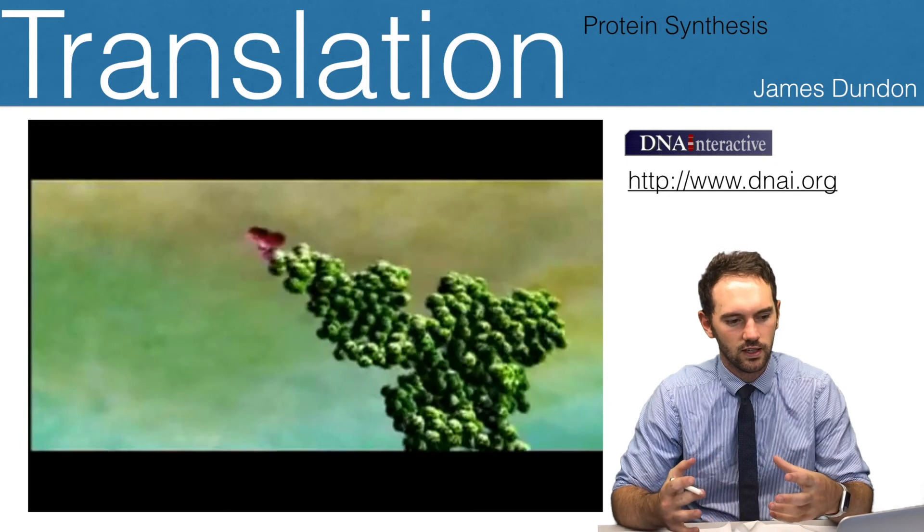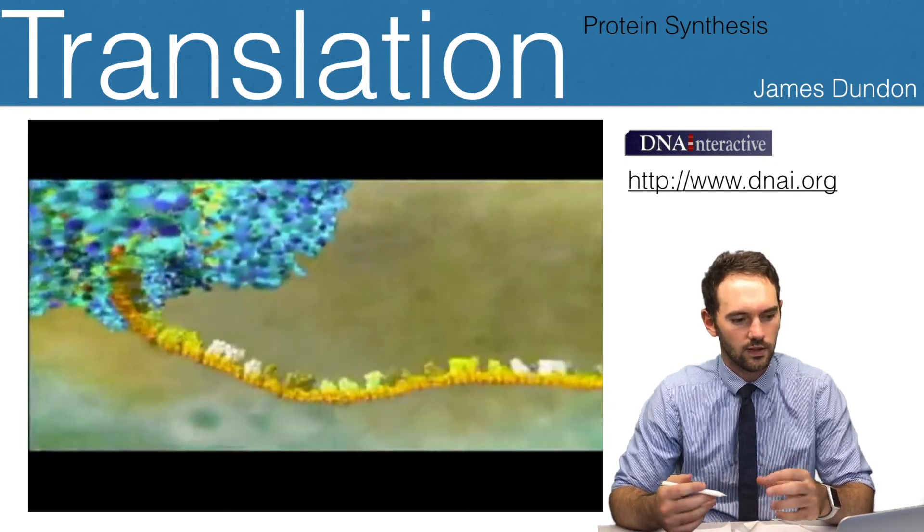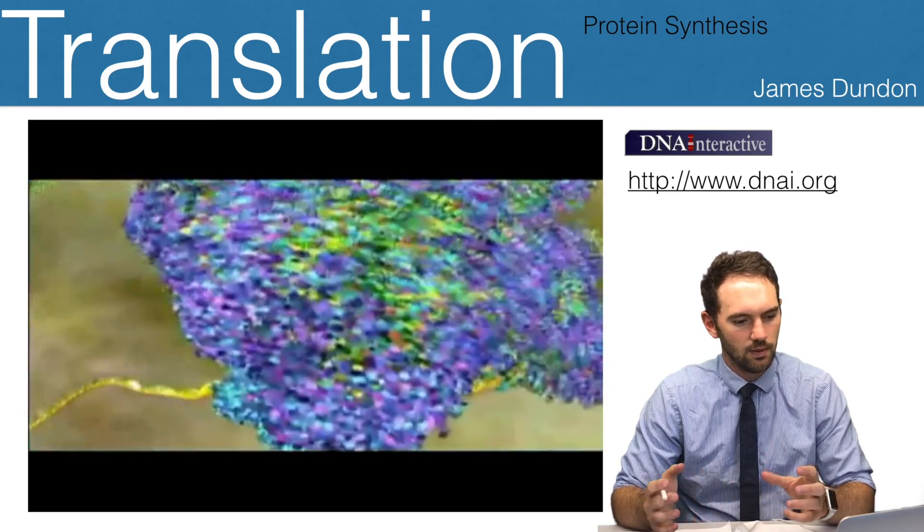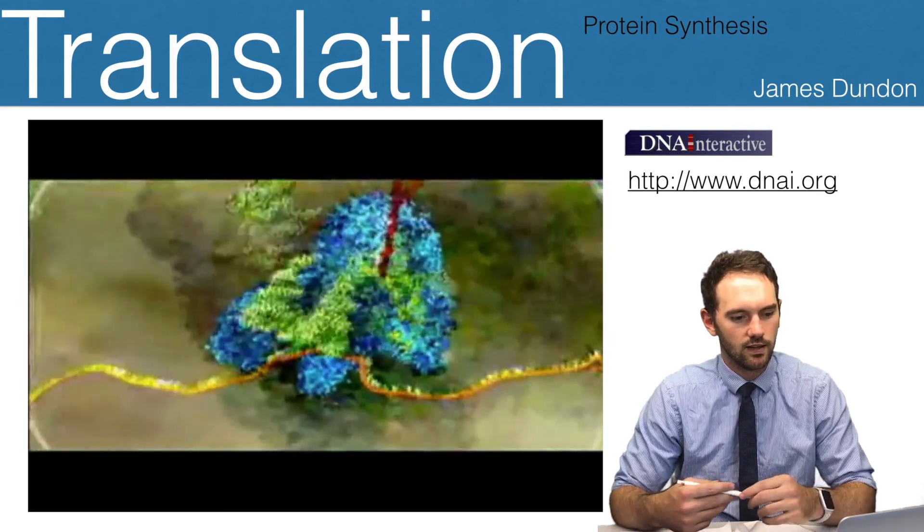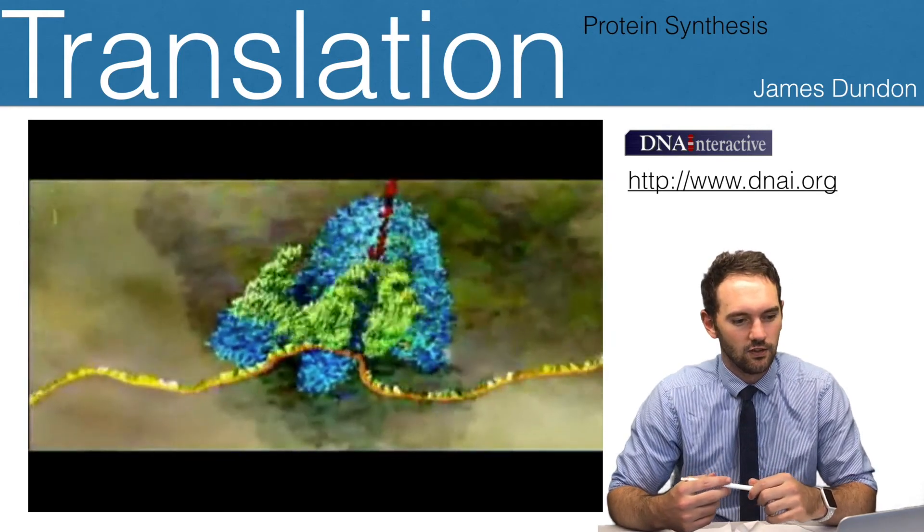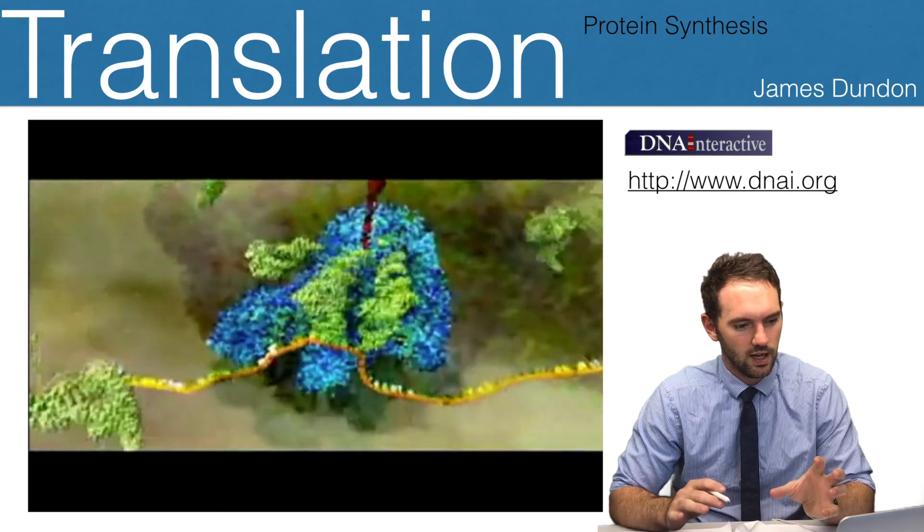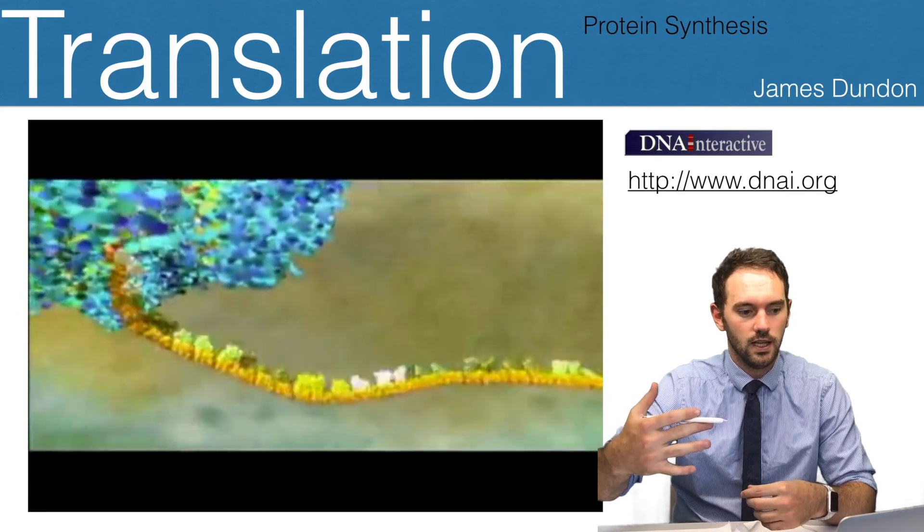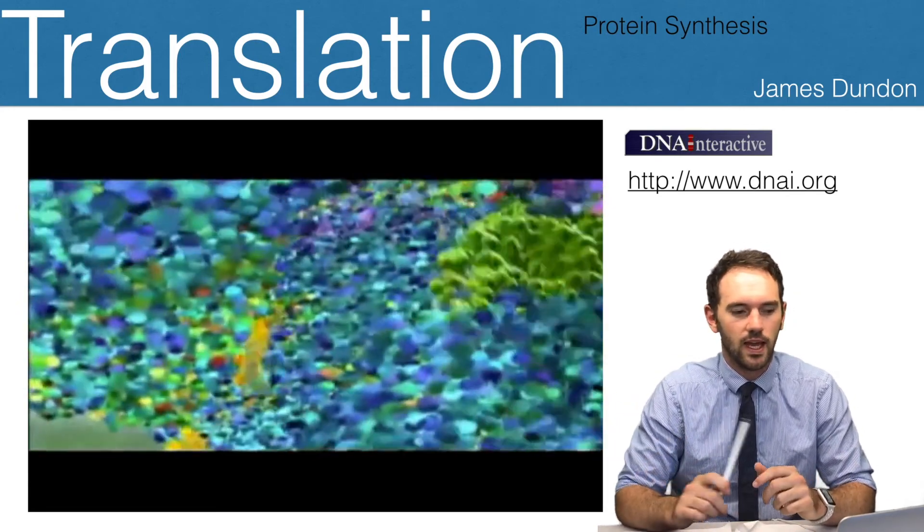Each one carries one of the 20 different amino acids. You can see them flicking through here: threonine, arginine, serine, threonine, all of the different amino acids, glutamic acid. Now you can see the mRNA moving through the ribosome, and we get to start to see some of the magic inside. You can see the three sites: the arrival site, the P site which is where the amino acid chain is building from, and it's just scanning three codons at a time.